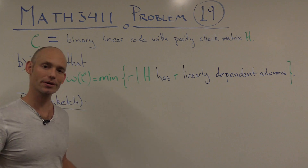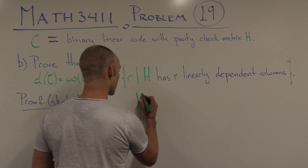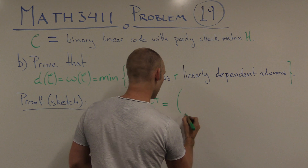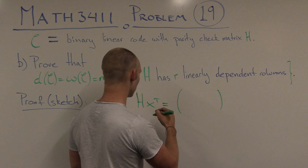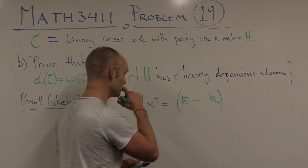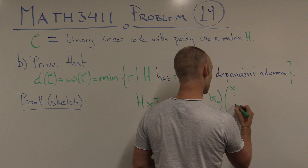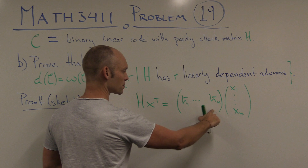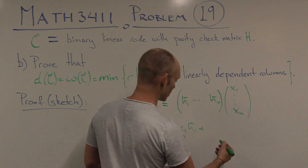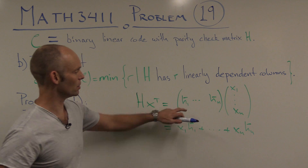We're not going to prove this in full detail — we'll sketch what lies at the heart of it. Consider the product H multiplied by some codeword transposed, call it x. We're interested in the columns of H; let's call them H1 to Hn. Let the codeword have coordinates x1 to xn. When we multiply that matrix by that vector, we get x1 times H1 plus x2 times H2, and so forth up to xn times Hn — a linear combination of the columns of H.